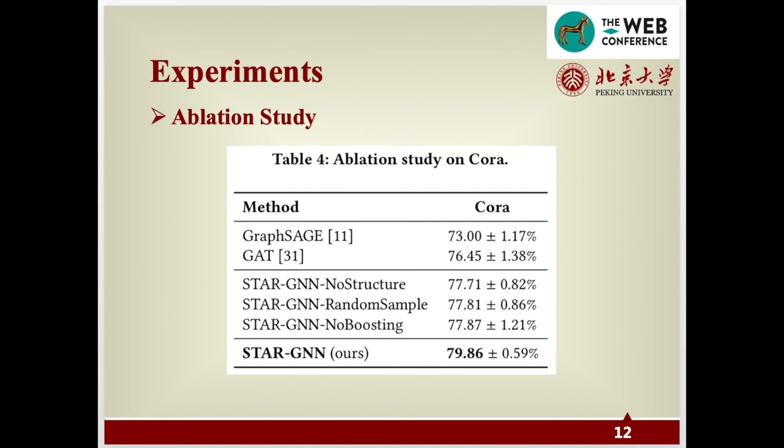We evaluate the effectiveness of each component in our model. Star-GNN no node structure refers to not incorporating the structural information into the construction of receptive fields but only using node features. Star-GNN random sample refers to randomly sampling 10 nodes in the neighborhood as in GraphSage, but not selecting important neighbors according to mutual information. Star-GNN no node boosting means that we do not use our subgraph-based boosting method but only use a mean aggregator. It can be seen that when constructing receptive fields, incorporating the structural information can bring about a 2% improvement, proving that structural information helps to select more useful neighbors. Each part of Star-GNN shows its power in this experiment.